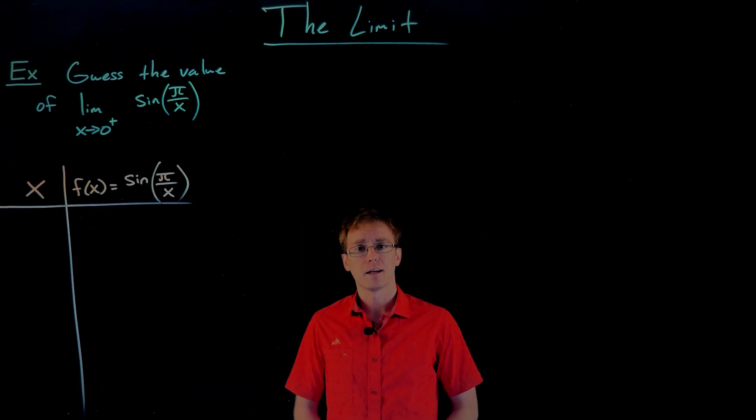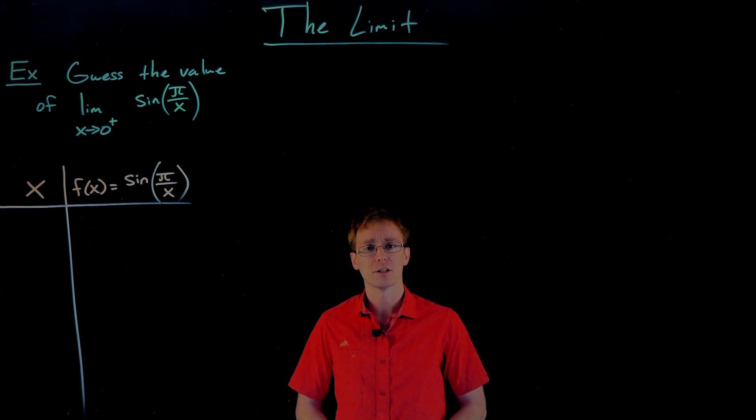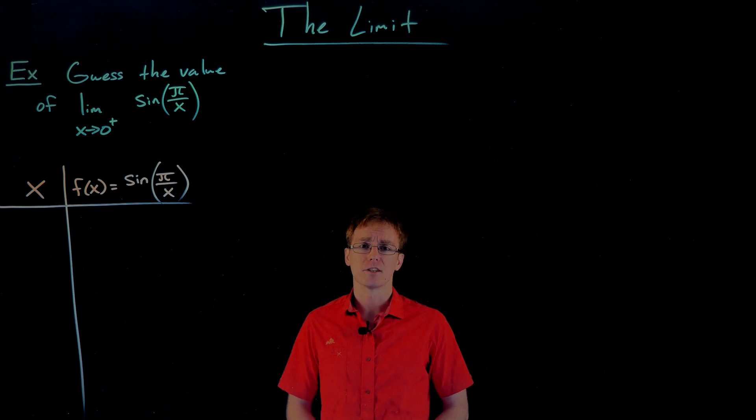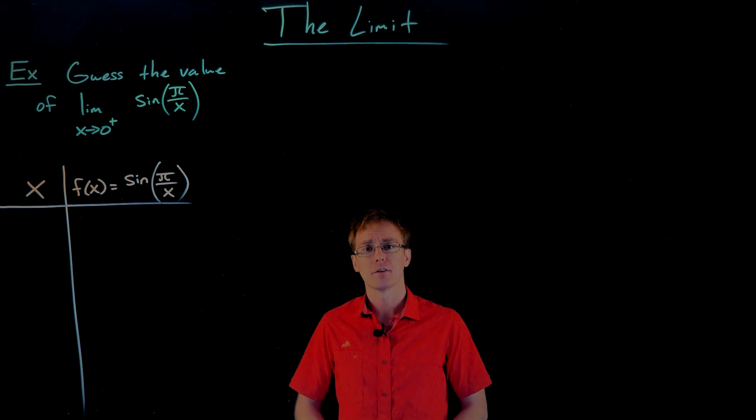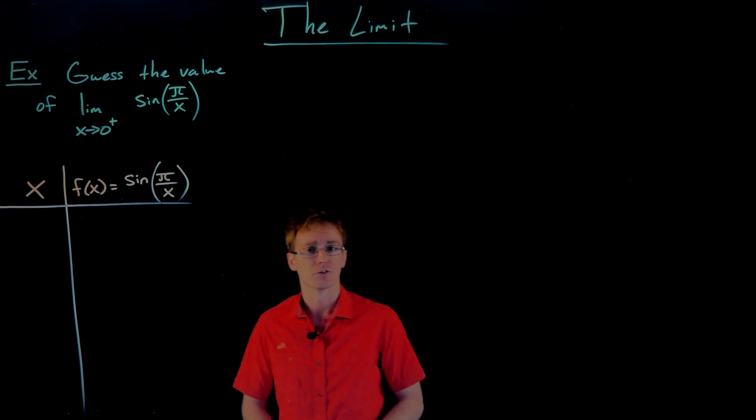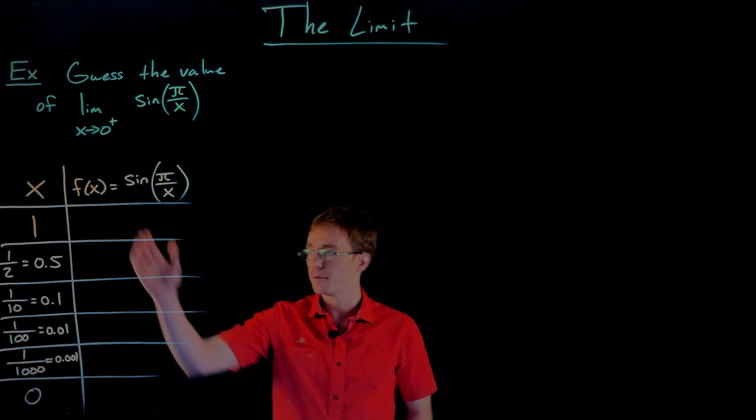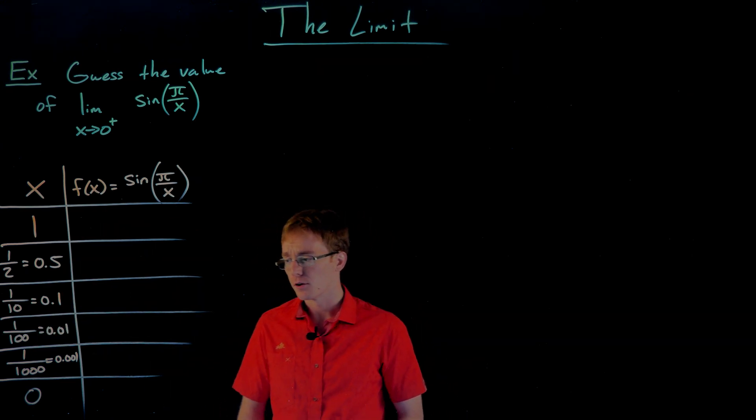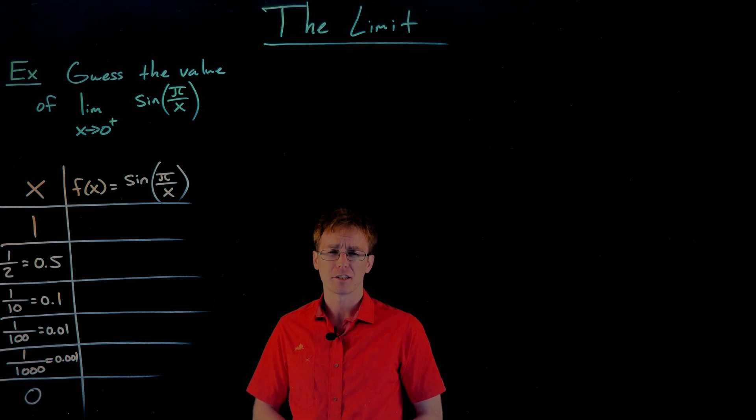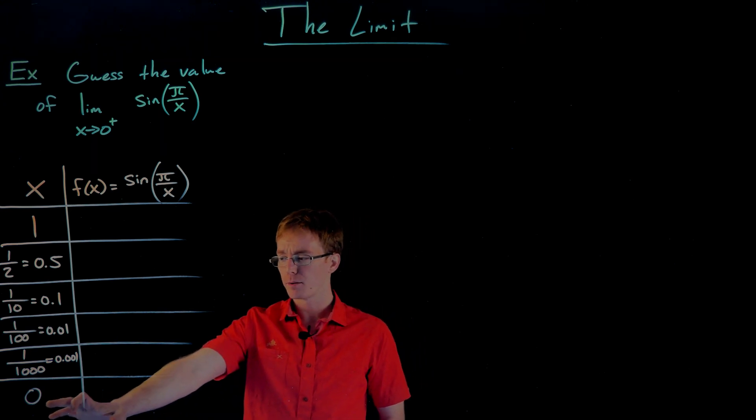So I want to do this example a couple of times with a couple of different sequence of x values that are always approaching zero from the right. We're going to see our function behaves differently for each sequence. The first sequence I'm going to do is going to start at one, then go to one half, and then one tenth, one one hundredth, one one thousandth, and so on. This is a pretty common pattern we use, especially when we're trying to approach x equals zero. All right, so I have my first sequence of x values set up and ready to plug into our function.